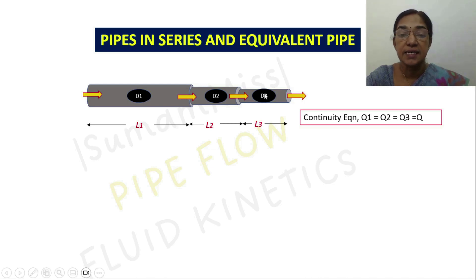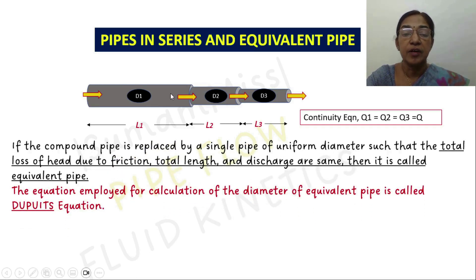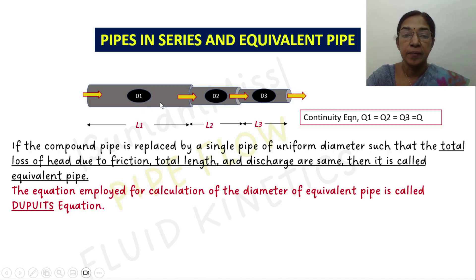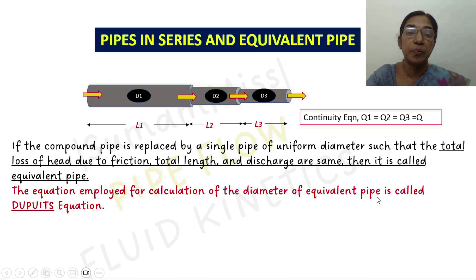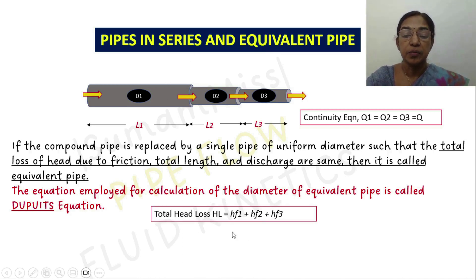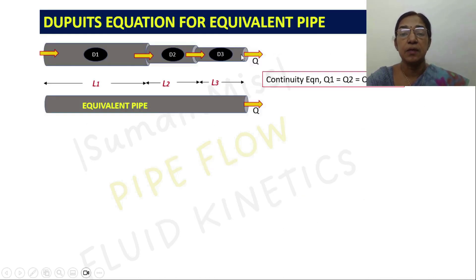Here you can see pipes connected in series, where L1, L2, L3 are the lengths and D1, D2, D3 are the diameters. The continuity equation gives Q1 = Q2 = Q3 = Q. Total head loss equals hf1 + hf2 + hf3. If this compound pipe is replaced by a single pipe of uniform diameter such that the total head loss due to friction, total length, and total discharge are the same, it is called an equivalent pipe. The equation used to calculate the diameter of this equivalent pipe is called Dupuit's equation.